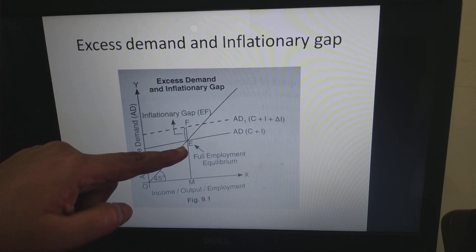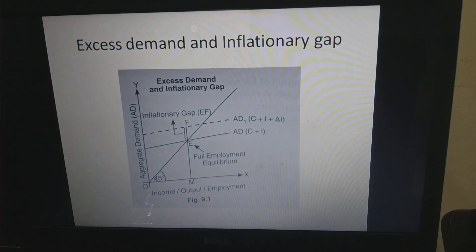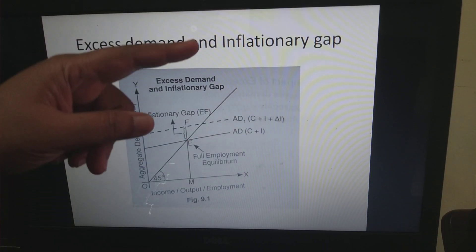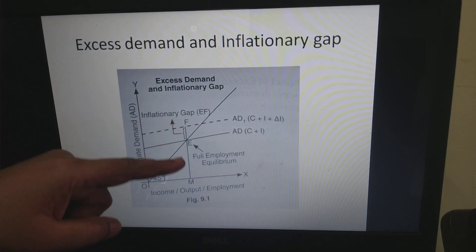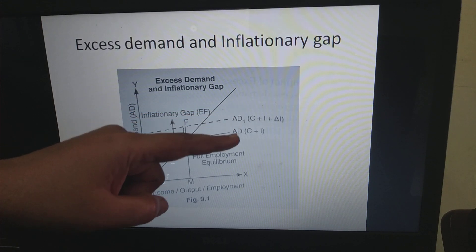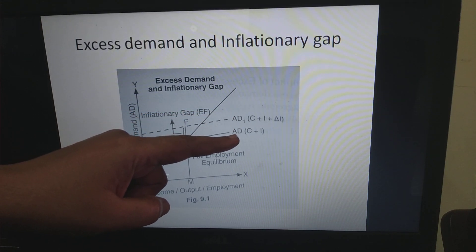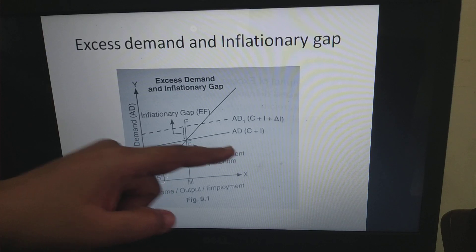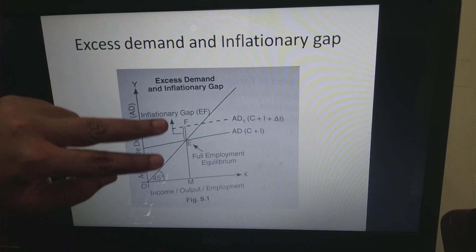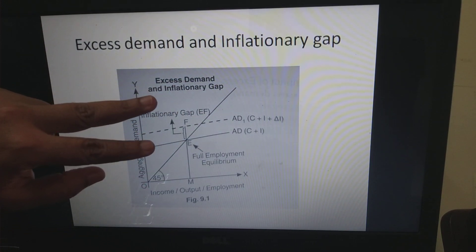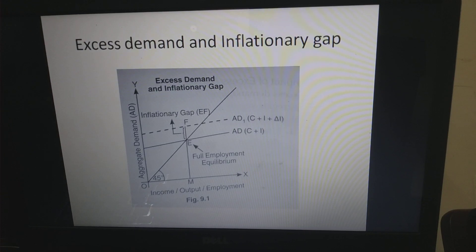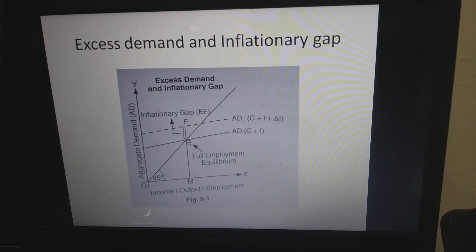What actually exists in the economy is AD1. That AD1, or the actual AD, is in excess of the full employment AD. Corresponding to the level of full employment, AD1 is greater than the full employment AD. This gap FE — the vertical distance between AD1 and AD — gives you the inflationary gap.